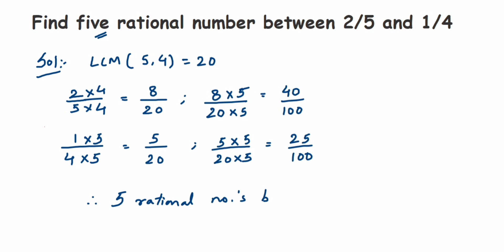...between 2 by 5 and 1 by 4 are—you can pick any 5. So I'm going to start with 26. So I like 26 upon 100. Next is 27 by 100. You can take 35, because 35 lies between 25 and 40.